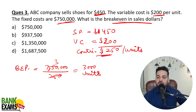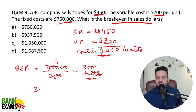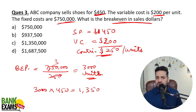But you need to calculate the break-even point in amount in dollars. So 3,000 multiplied by the sales price of 450 gives you 13 lakh and 50 thousand dollars — that would be your answer.